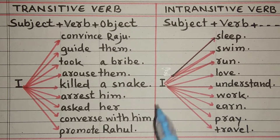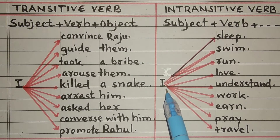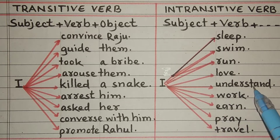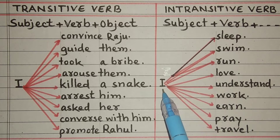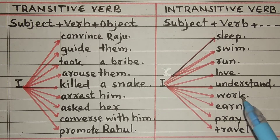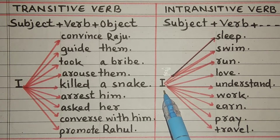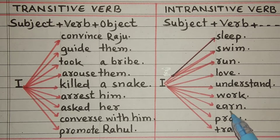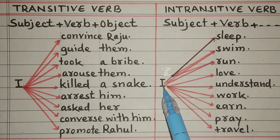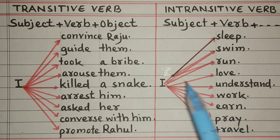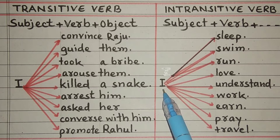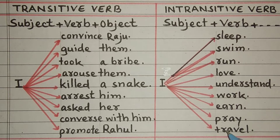Kon? I. Kya karta hai? Samajhta hai — Understand. Kon? I. Kya karta hai? Kaam karta hai — Work. I work. Kon? I. Kya karta hai? Earn — kamaata hai. Kon? I. Kya karta hai? Ibadat karta hai — Pray. Kon? I. Kya karta hai? Suffer karta hai — Travel. Dear students, in sab verbs mein object ki zaroorat nahi padti — yeh intransitive verbs hain.